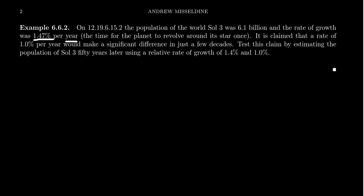And what do I mean by a year? On Sol 3, a year is defined to be the time it takes for the planet to revolve once around its star. The star, of course, being Sol. Sol 3 is the third planet away from Sol.